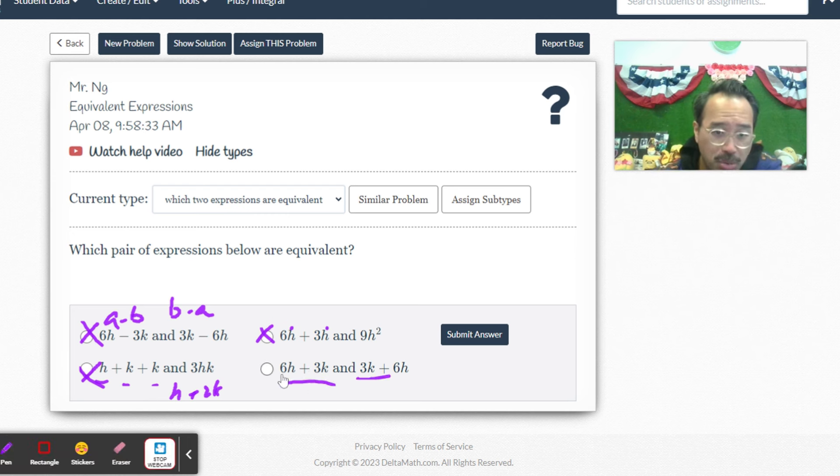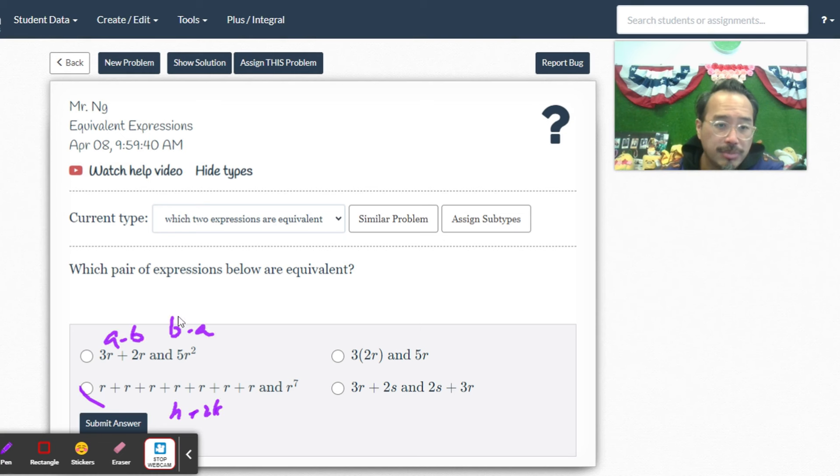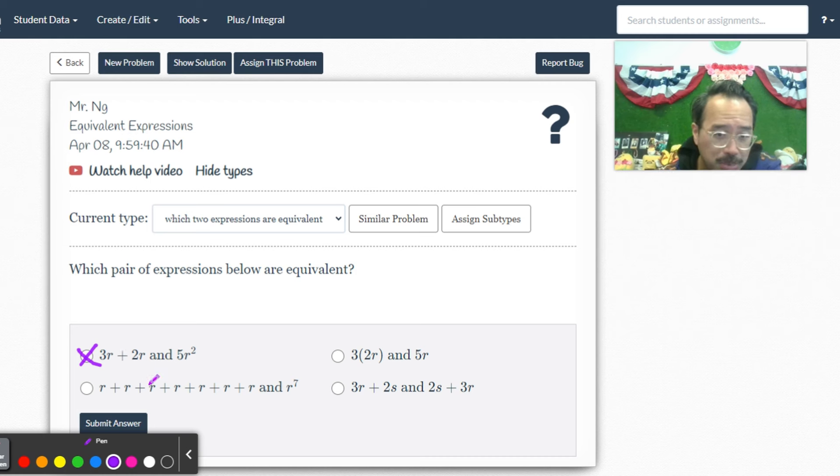Let's do one more. Hopefully it doesn't get any more difficult than this. So this is also not true: 3r and 2r is 5r, not 5r squared, that's no good. r plus r plus r plus r - that's 7r, not r to the seventh.